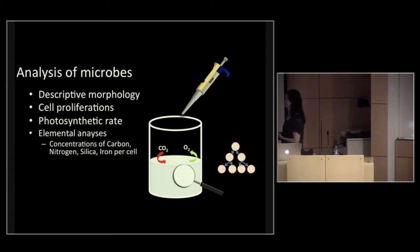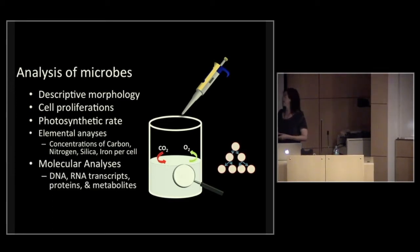Analyzing the elements is what I mean by elemental analyses. We can look at the concentrations of carbon or nitrogen, silica, per cell, on a cell-by-cell basis. And then last, of course, we can do molecular analyses. And we are in the Department of Genome Sciences. I'll give a small introduction as to what we do here.